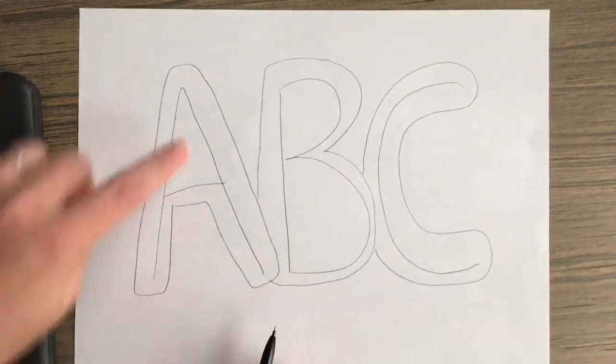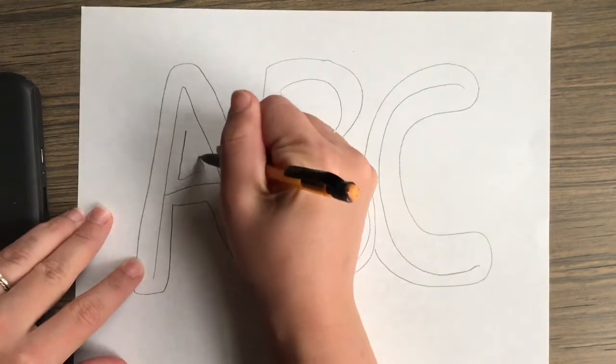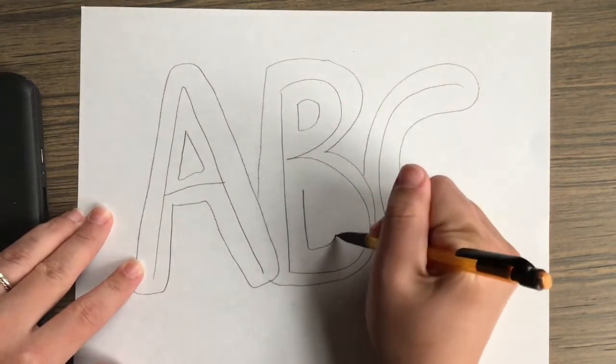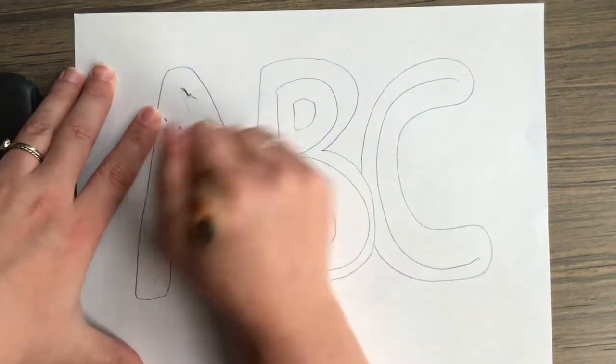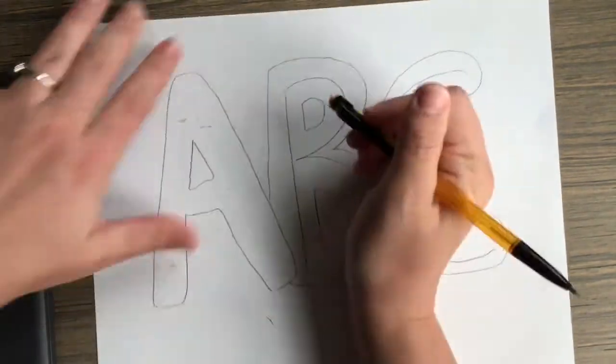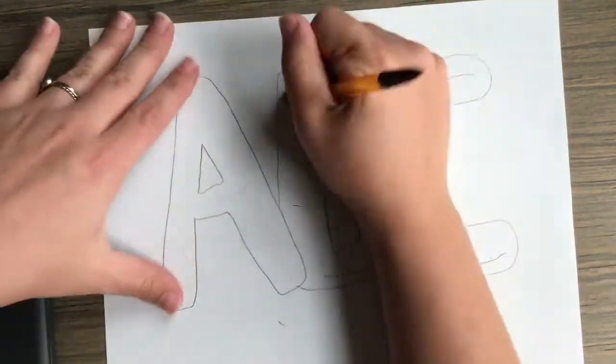If the letters have a hole, like the A or the B, make sure that you also trace another shape inside the hole of the letter. And then you'll erase that line that you drew first, which is kind of like the skeleton of the letter.